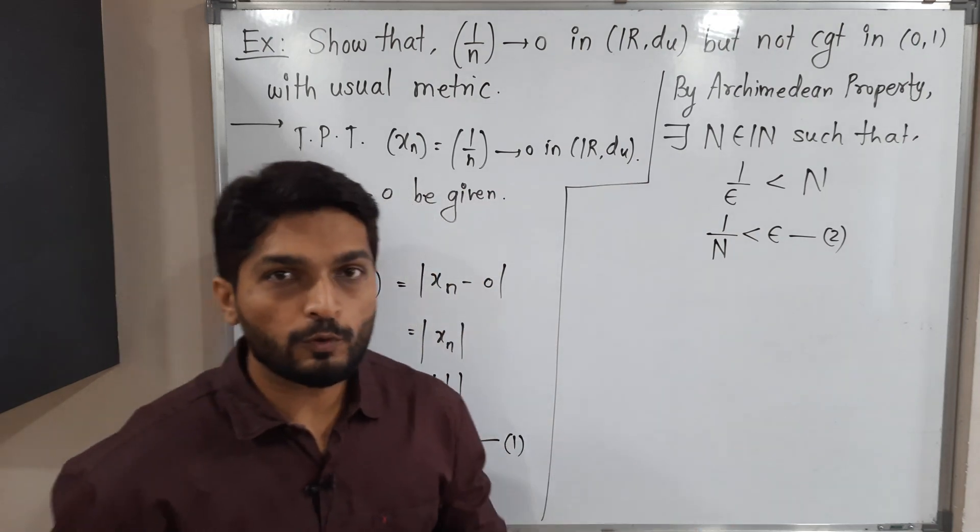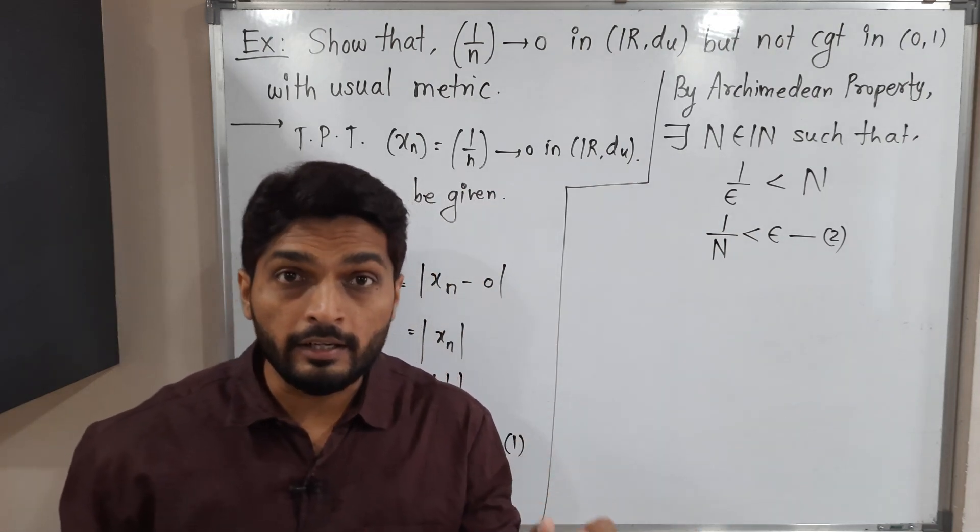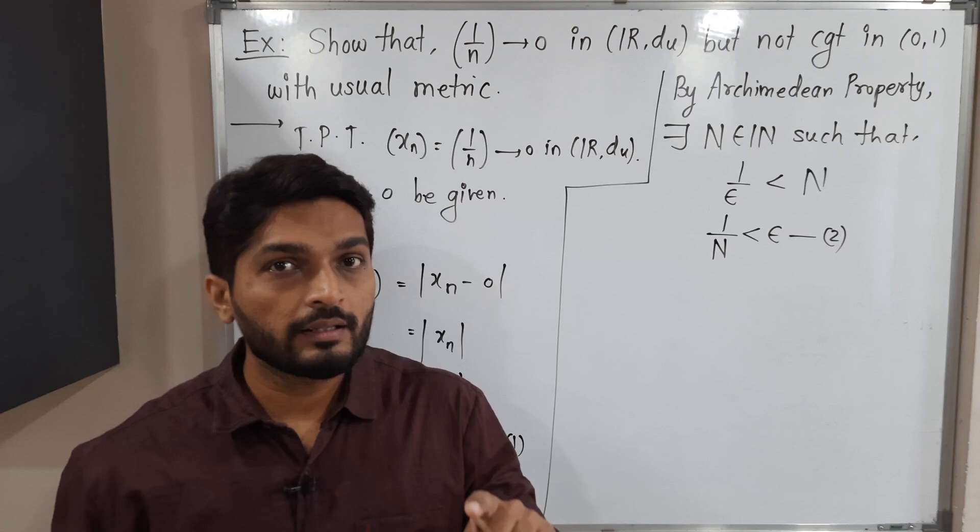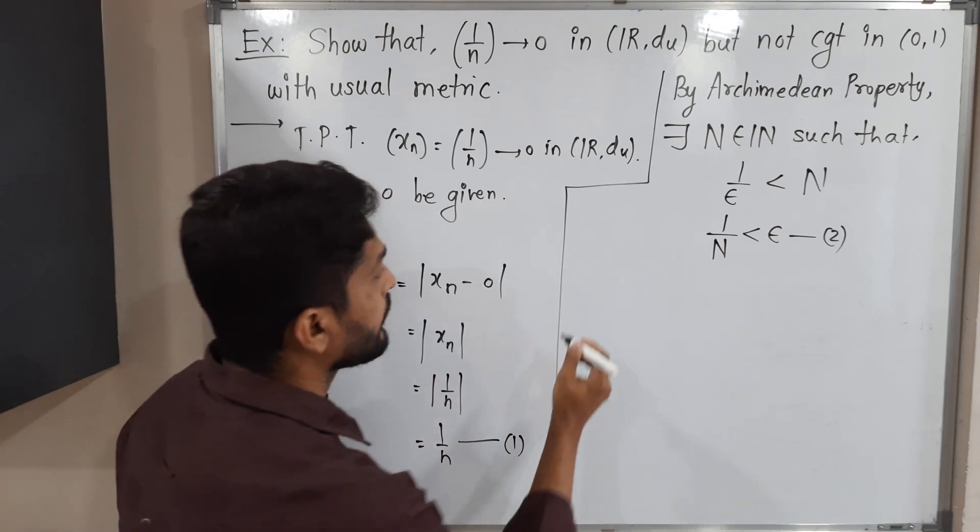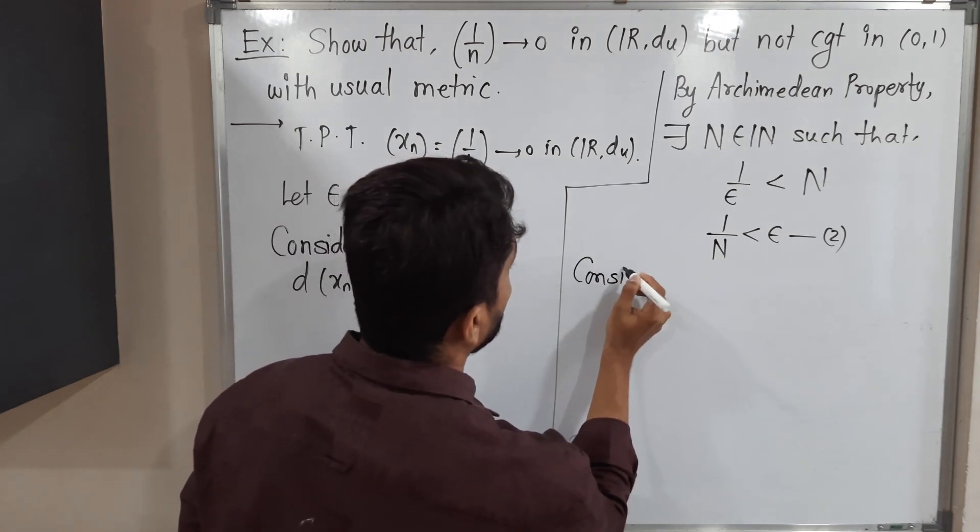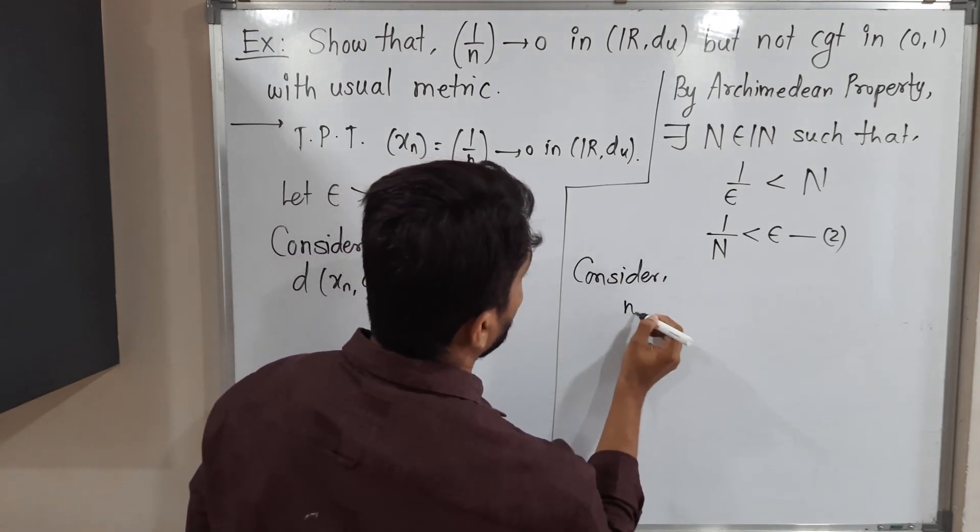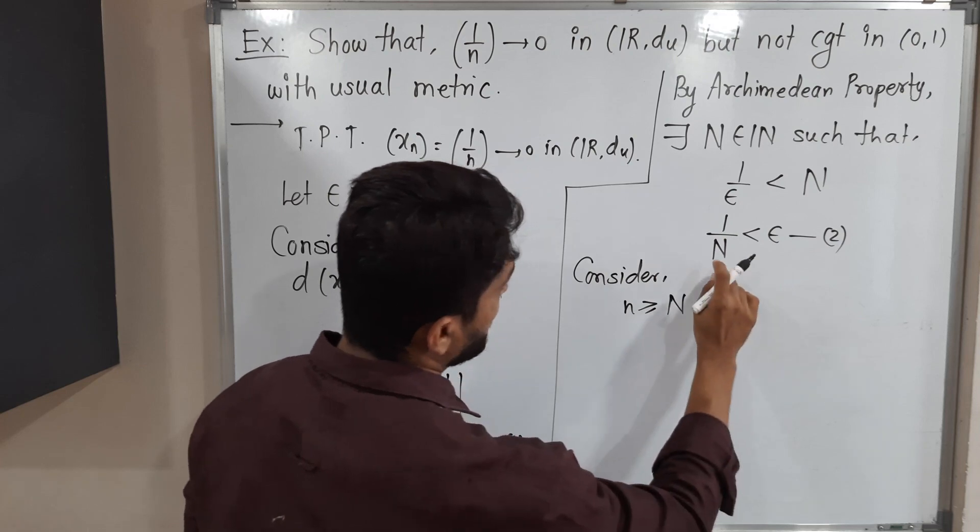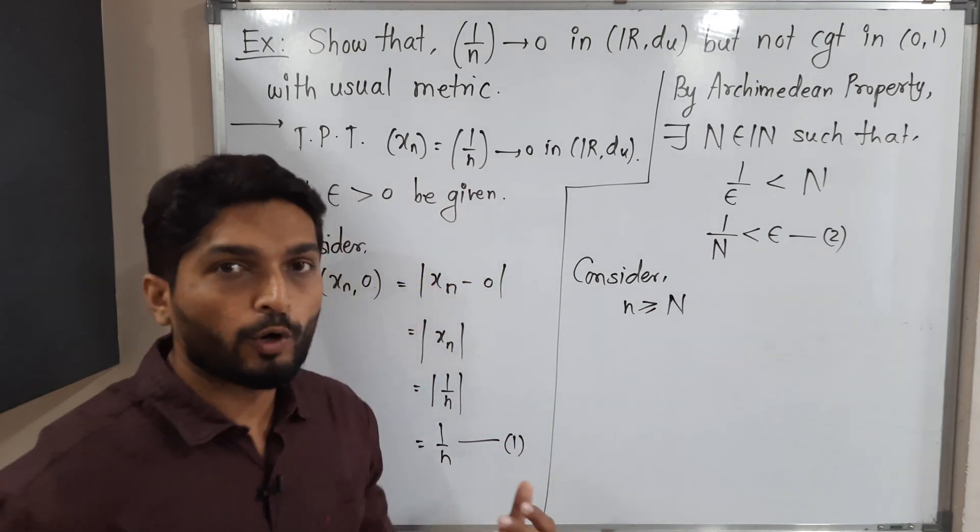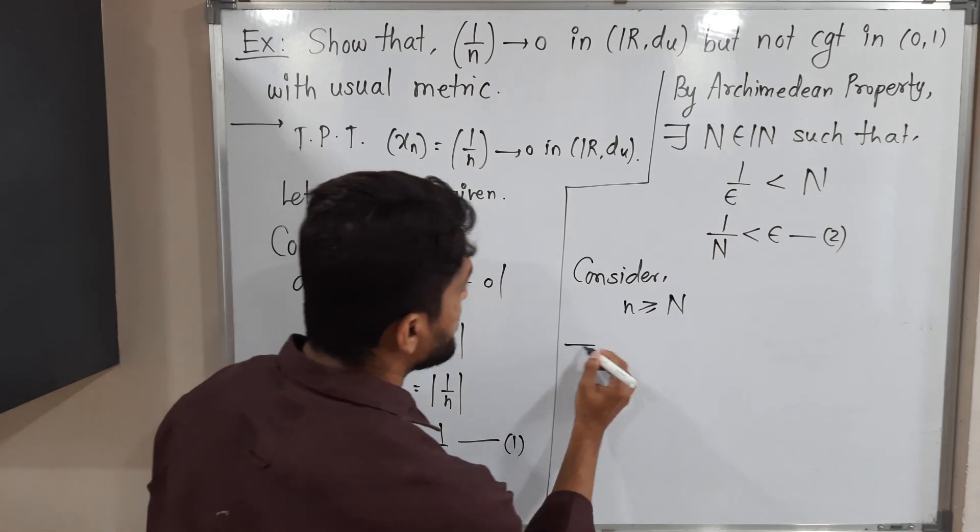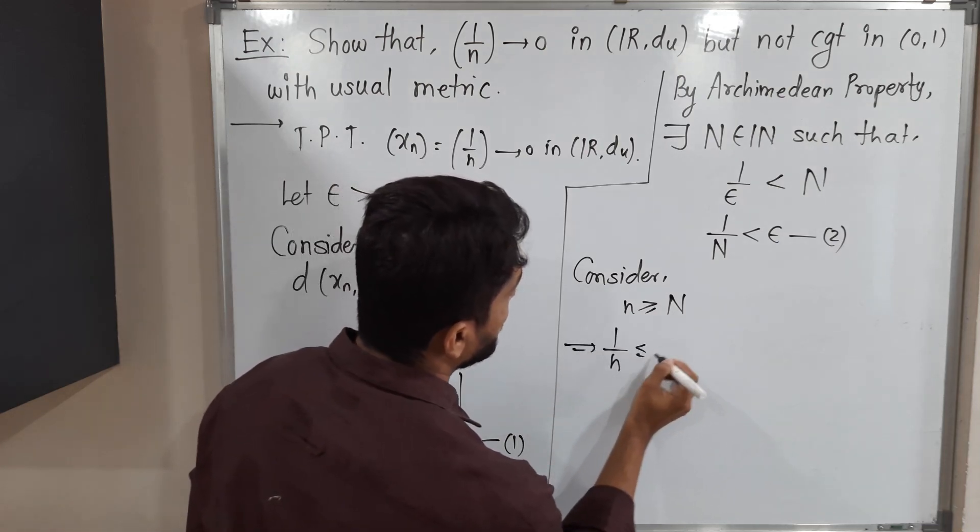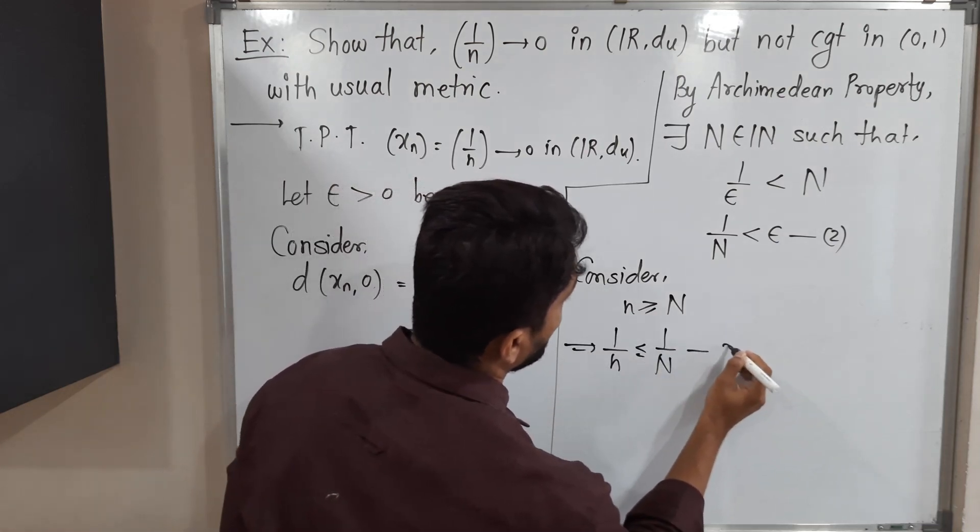See, in the definition of convergent sequence, at the end we write n greater than or equal to capital N. So that inequality we should consider. Consider n greater than or equal to capital N. But that capital N we have in denominator. So I will take reciprocal of both sides. If you take reciprocal, inequality will get changed. This is equation 3.